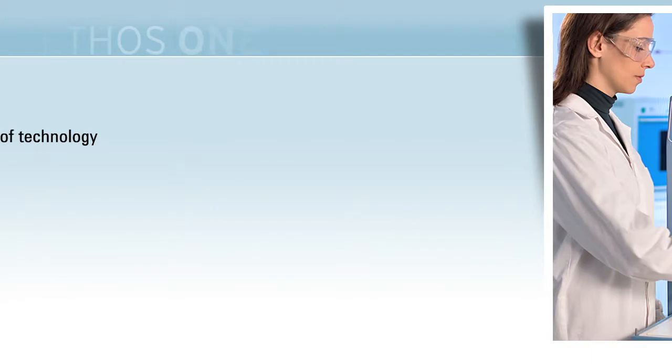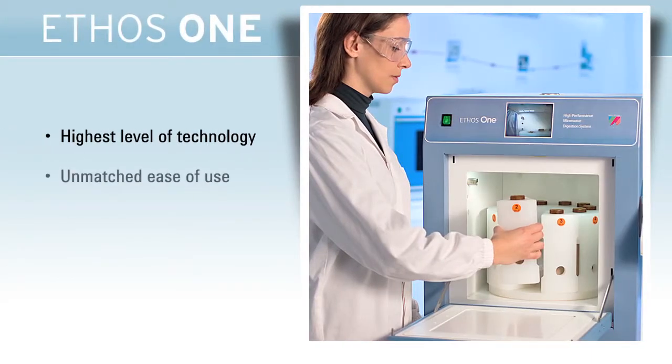The Ethos One combines the highest level of technology with an unmatched ease of use. From the microwave hardware to the control terminal, from reaction sensors to pressure vessels, everything is built to the highest standard. The Ethos One is the only microwave system with a cabinet and door made completely from stainless steel.